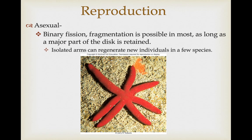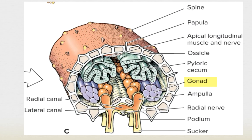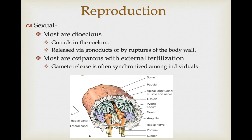Asexual reproduction is fairly common — binary fission and fragmentation are possible in most species as long as some part of the central disc is retained. Isolated arms can regenerate new individuals in a few species, so you don't even need part of the disc. Most are dioecious, with separate male and female individuals. Gonads are produced in the coelom and released via gonoducts or sometimes by rupturing of the body wall. Most release their eggs externally — oviparous with external fertilization — and gamete release by individuals in a population is highly synchronized to maximize fertilization efficiency.